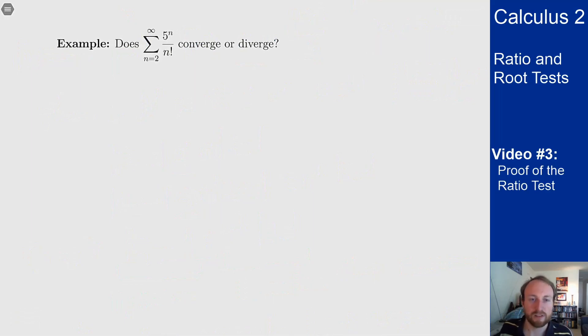As for another example of a series we can test with the ratio test, does sum from n=2 to infinity of 5^n over n factorial converge or diverge? The key point to look at here is this factorial. That's a big sign that you should be using the ratio test to solve these problems. Let's go ahead and write this out.